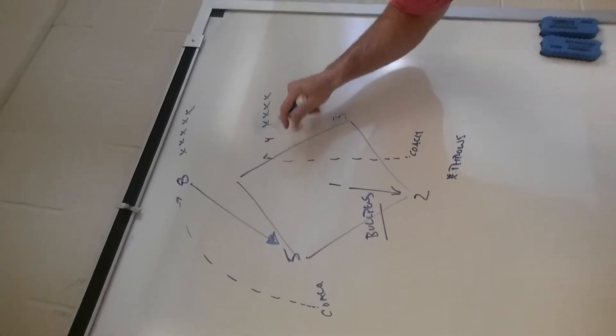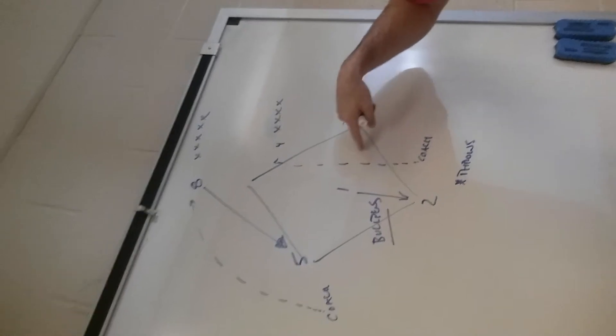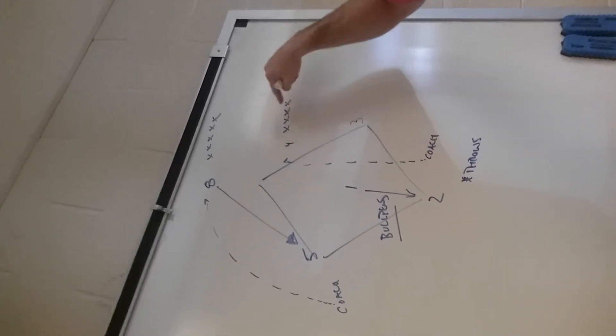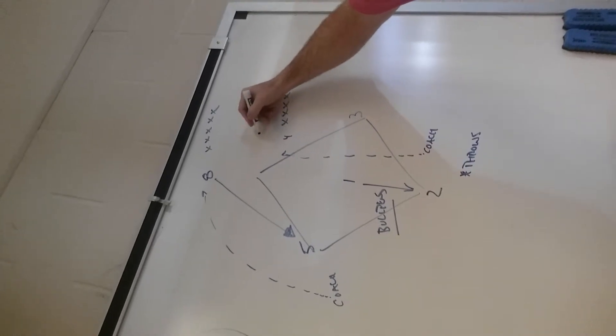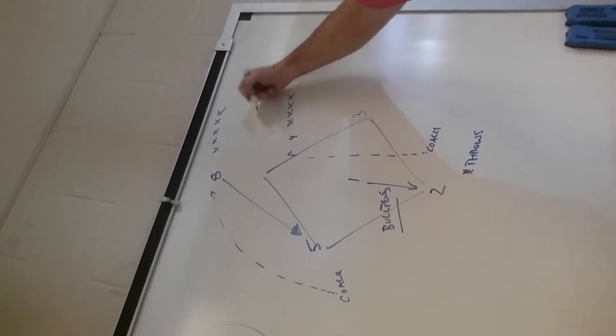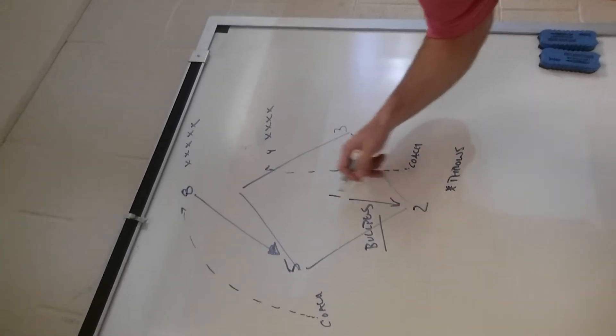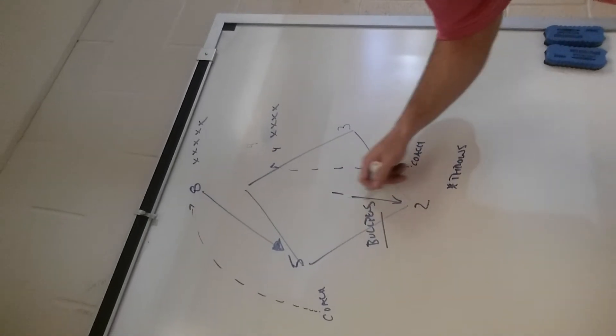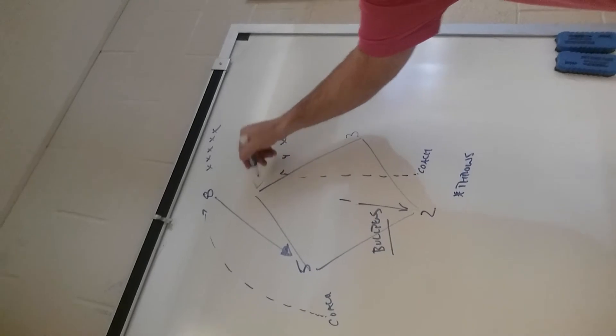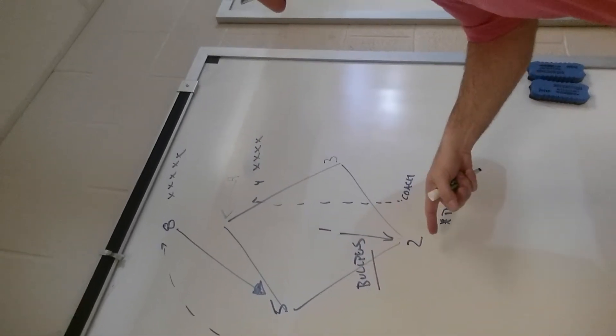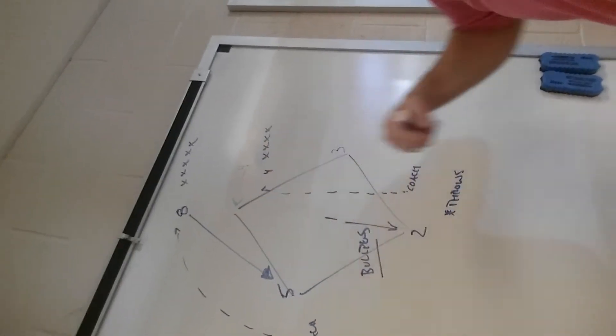Now, I do have second basemen out here, and they're working with a different coach. But when I do this, I tell them that the last guy in line should be heads up for a runner call. So if at any moment a coach yells runner, this catcher could throw to that second baseman covering. Although we are doing bullpens to catchers, we do want to give our catchers an opportunity to throw.